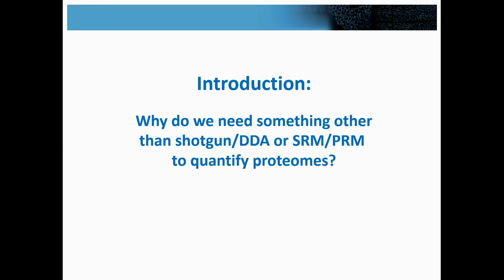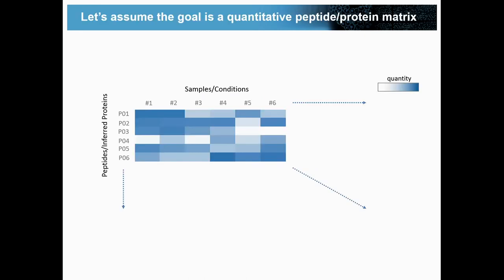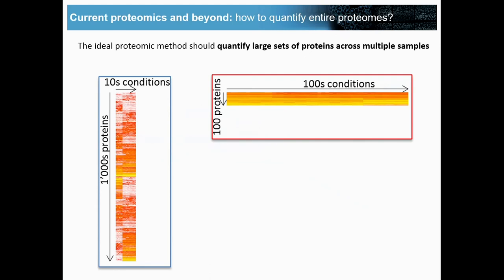Why do we need something other than DDA or SRM/PRM to quantify proteomes? Let's assume, as Rudy said, that the proximal goal of any of these experiments is some kind of quantitative matrix, where you have samples and conditions in one dimension, and the analytes — either peptides or inferred proteins — in another dimension, with some quantity. This matrix can have different dimensions, but this is generally the goal. In DDA we have particular characteristics, and in SRM people tried to make quantification more robust and reproducible. The question is whether we can have both characteristics in a single method.